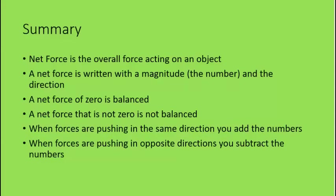In summary, a net force is the overall force acting on an object — when we've added and subtracted all forces acting on it to get down to one number and direction. A net force is always written with a magnitude and a direction. A net force of zero is called balanced; a net force that is not zero is unbalanced. When forces push in the same direction, you add the numbers because they're cooperating. When forces push in opposite directions, you subtract those numbers because they're working against each other.